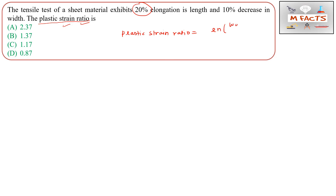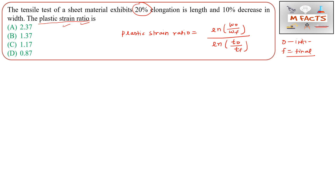The plastic strain ratio r is equal to ln(w₀/wf) divided by ln(t₀/tf). Here w₀ is the initial width, wf is the final width. Similarly, t₀ is the initial thickness and tf is the final thickness. The subscript naught denotes initial value and f denotes final value.